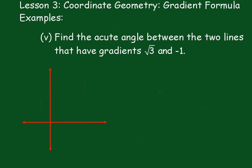Okay the final example, we have to find the acute angle between the two lines that have gradients √3 and negative 1. So let's just draw these lines. So √3, positive gradient, reasonably steep. It doesn't matter where you put these. So m₁ equals, just make sure there is a positive gradient. And the other one m₂ negative 1, so going down here something like that.